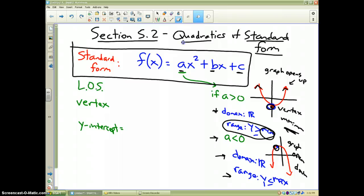However the range is now this vertex is now a maximum value. It's the highest the graph is going to get. Therefore the range is all y values that are less than or equal to whatever that maximum is. I apologize, my graph is slightly off, but this point right here at the top of the graph, that point is now called a maximum.